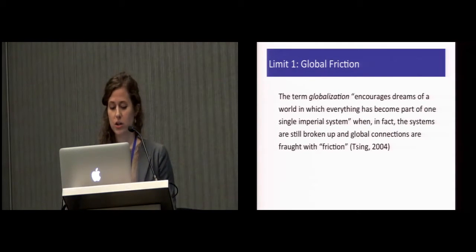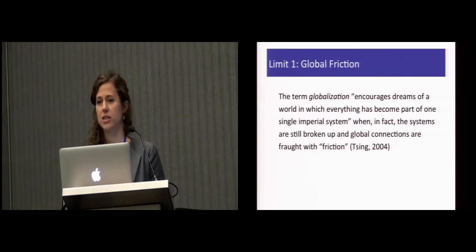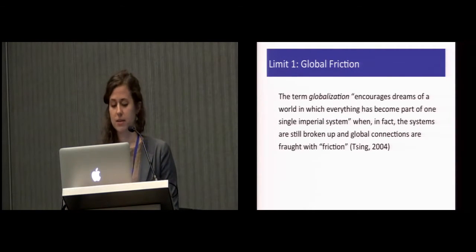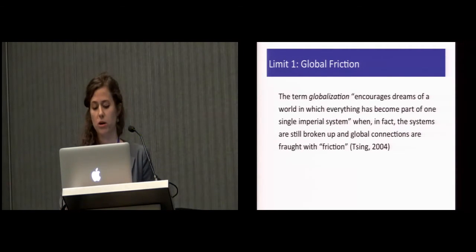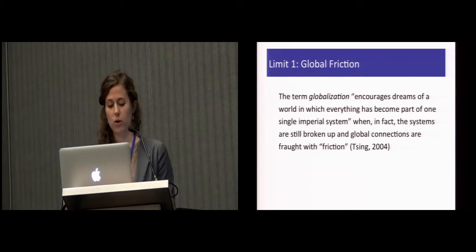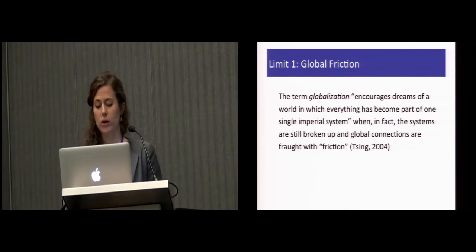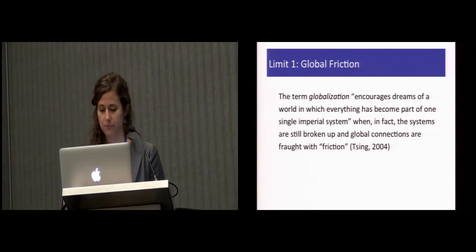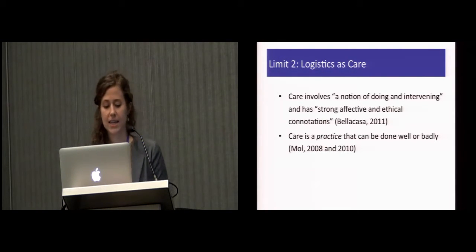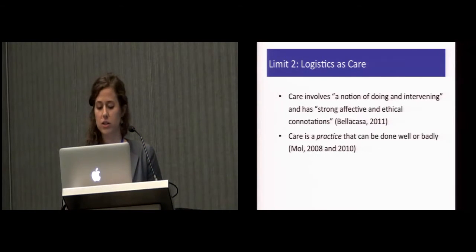We argue, however, that the term globalization, as anthropologist Anna Tsing so beautifully describes, encourages dreams of a world in which everything has become part of one single imperial system, when in fact the systems are still broken up and global connections are fraught with friction. The second main limitation is that the critical logistics scholars have neglected to recognize the care which also makes up a part of logistics.